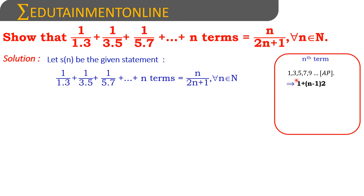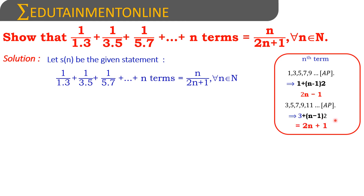The nth term of an AP is a + (n−1)d, so 1 + (n−1)×2, which simplifies to 2n−1. The second series is 3, 5, 7 and so on, with first term 3, giving 3 + (n−1)×2, which simplifies to 2n+1. So the nth term of the series will be 1/[(2n−1)(2n+1)].